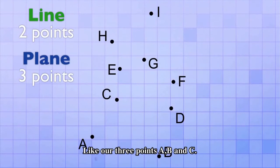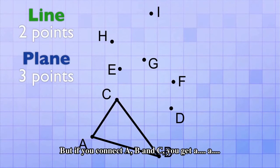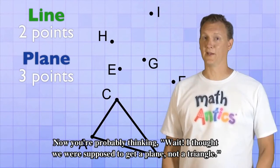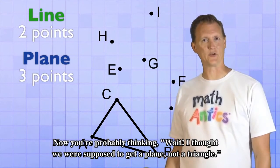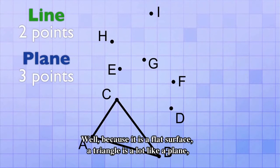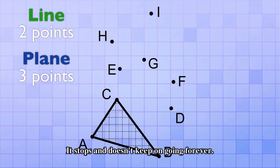Like our three points A, B, and C. If you just connect A and B, you get a line. But if you connect A, B, and C, you get a triangle. Now you're probably thinking, Wait! I thought we were supposed to get a plane, not a triangle. Well, because it is a flat surface, a triangle is a lot like a plane. But it has three edges. It stops and doesn't keep on going forever.